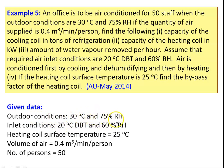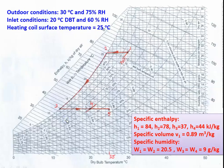Given data: outdoor condition 30 degree Celsius, 70 percent relative humidity; inlet condition 20 degree dry bulb temperature and 60 percent relative humidity; heating coil surface temperature 25 degree Celsius; volume of air 0.4 cubic meter per minute per person; number of persons 50. We take the psychrometric chart and write down the data.